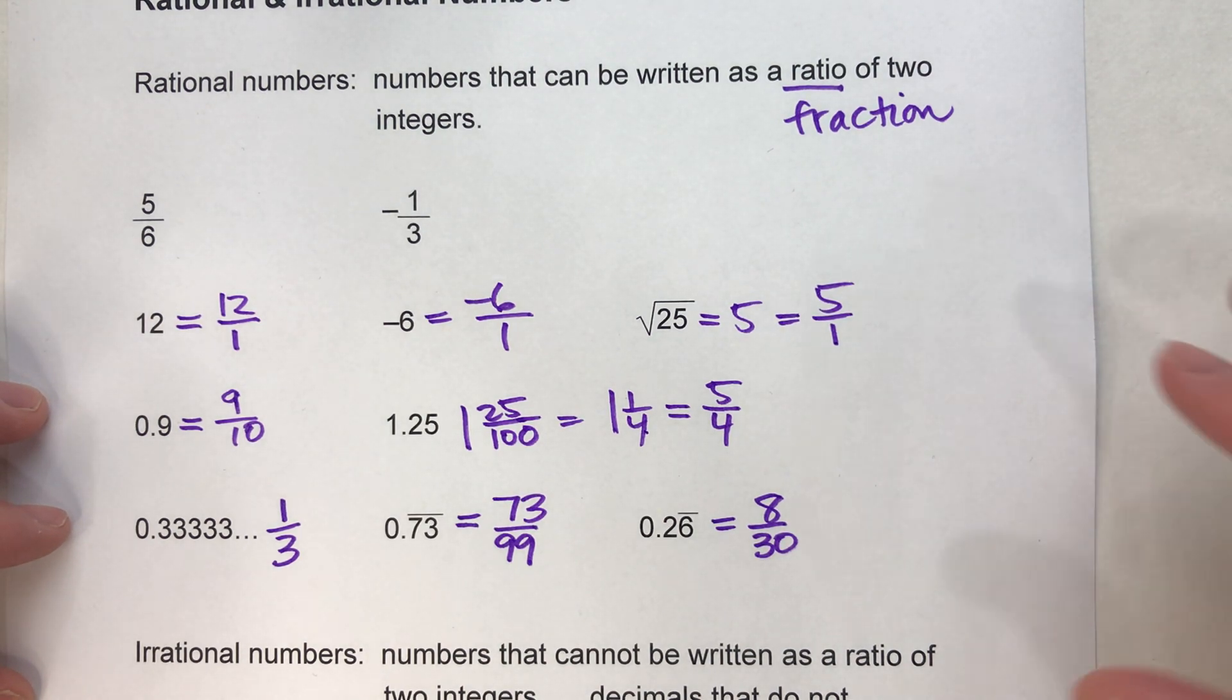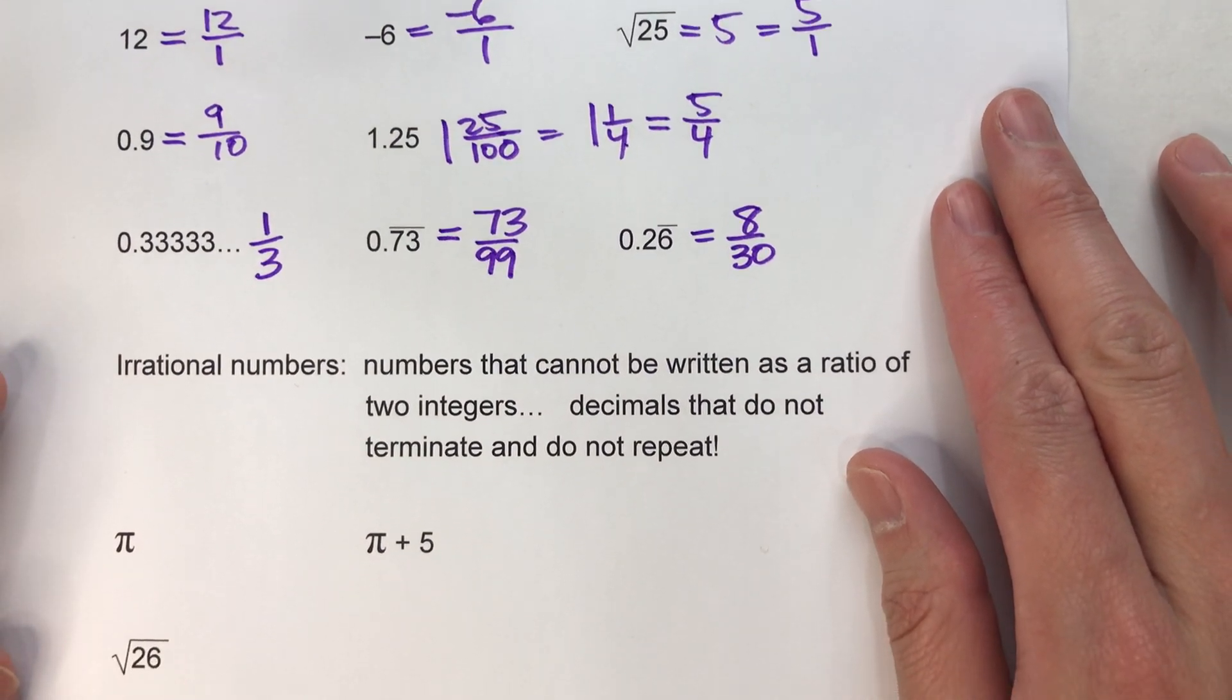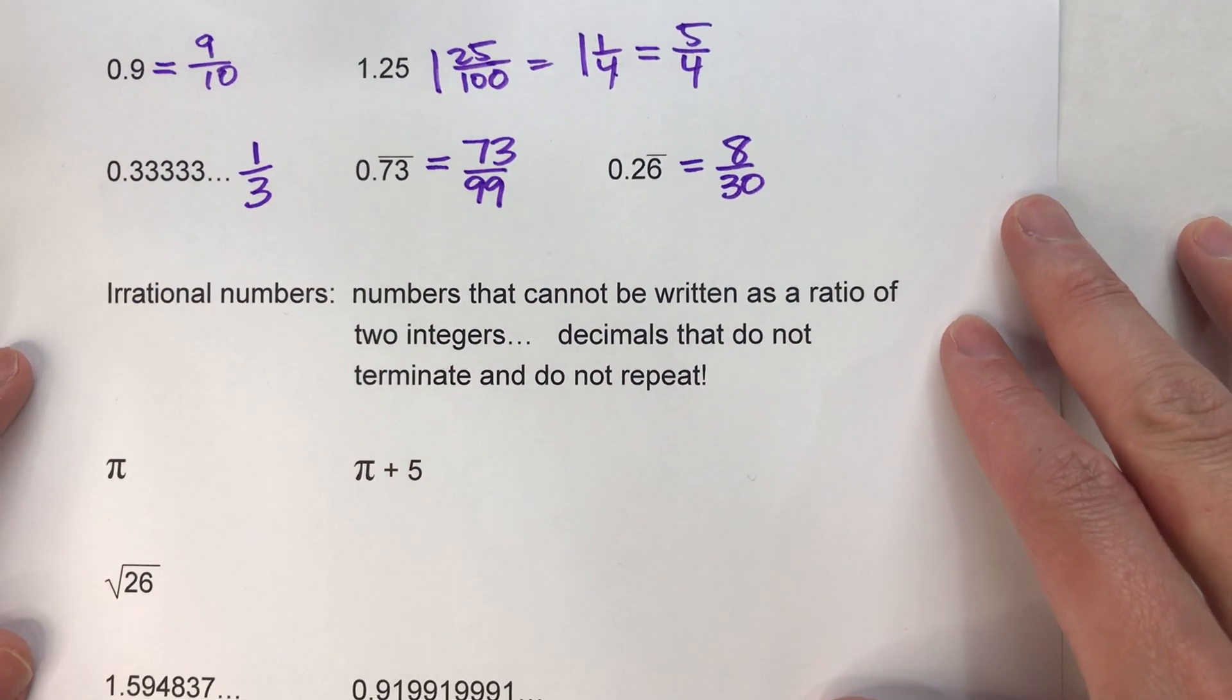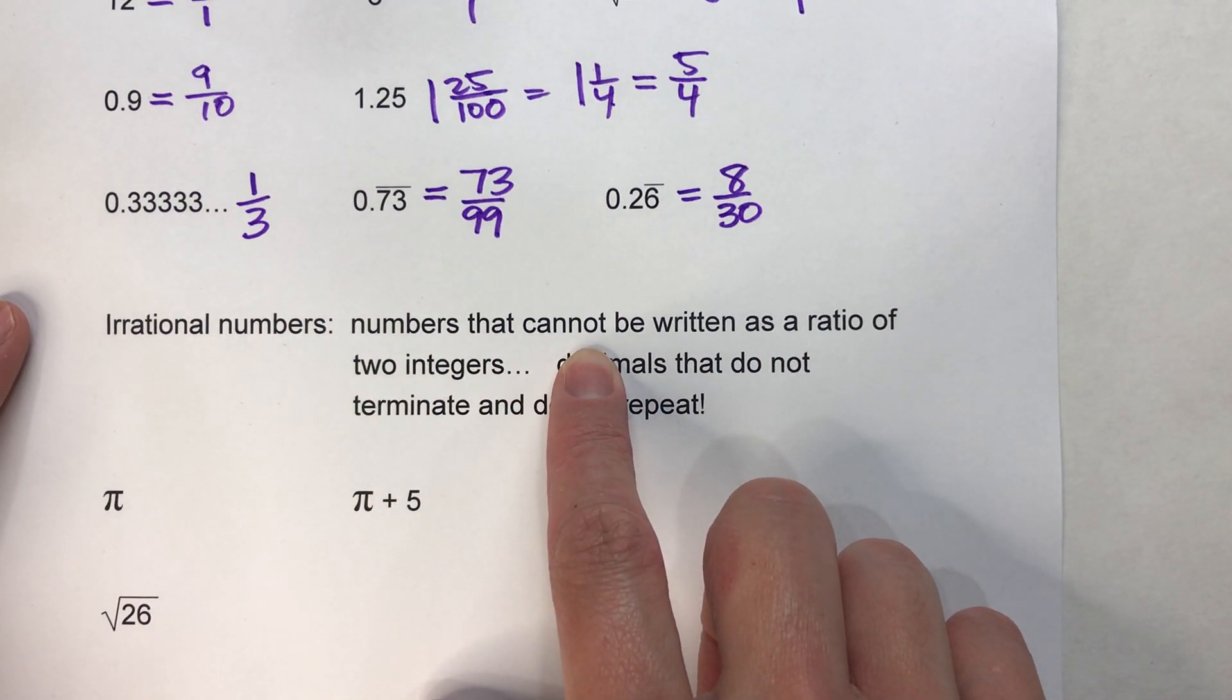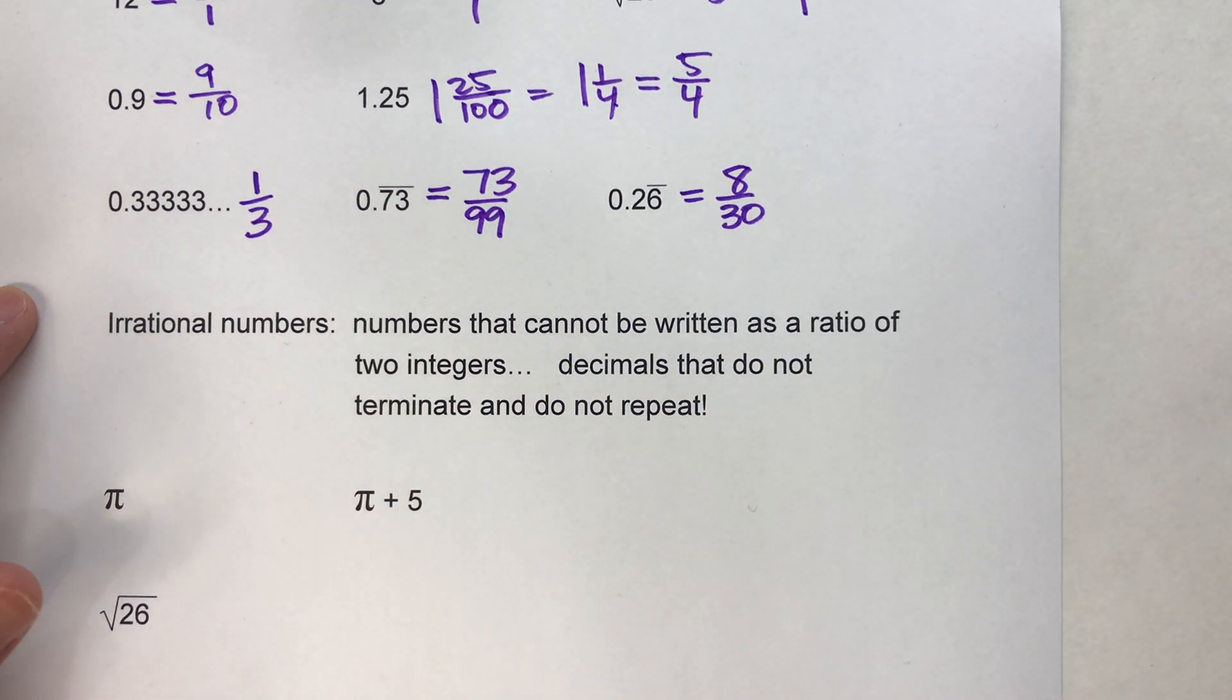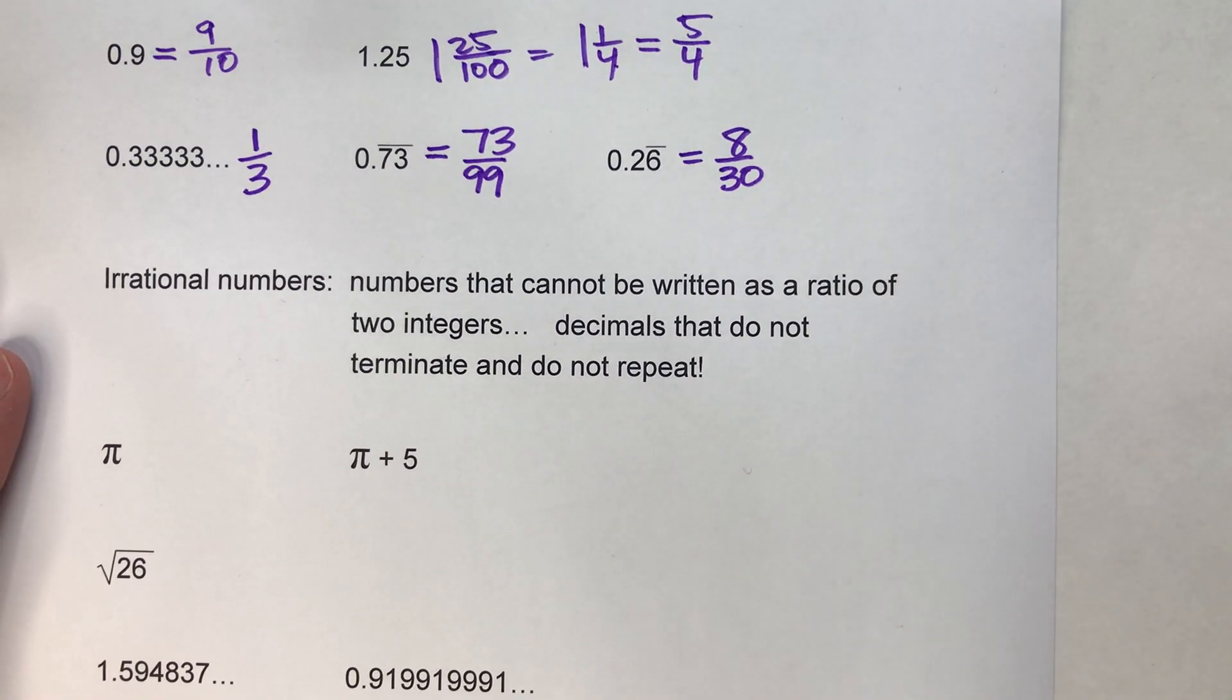Now you're probably wondering, what's left? What could possibly be irrational? Well, first off, the definition of irrational: numbers that cannot be written as a ratio of two integers. So if you can't write it as a fraction, then it's irrational.